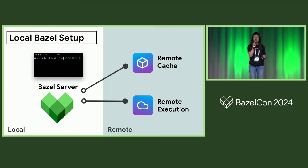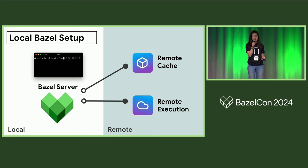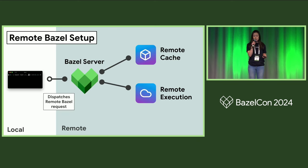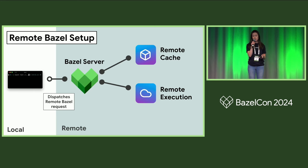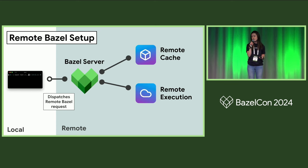Most of us are familiar with remote cache and remote execution, which are orchestrated by a Bazel server running locally on a machine, and the Bazel command runs locally as well. With Remote Bazel, we run this Bazel server and execute the Bazel command on a remote runner. The local machine is only in charge of dispatching the remote run, and 100% of the execution occurs remotely. You can think of it as spinning up a VM for the duration of a single Bazel command.